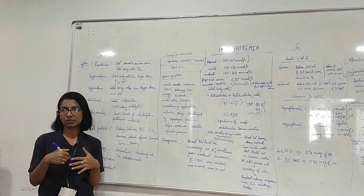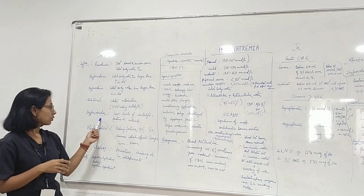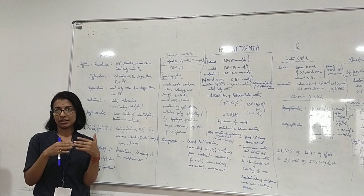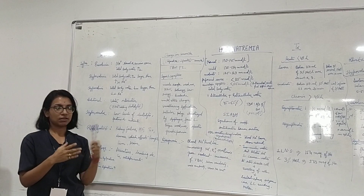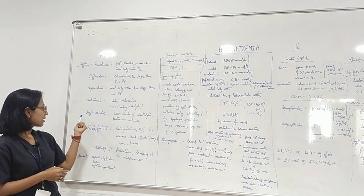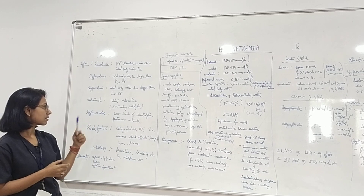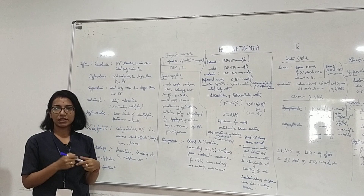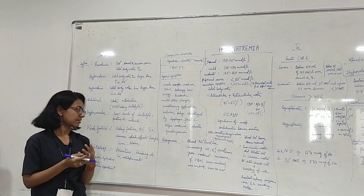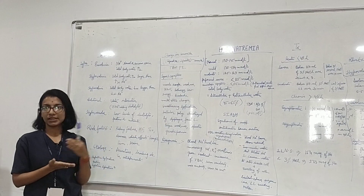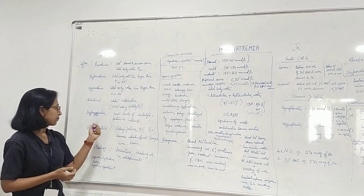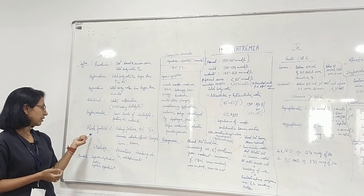Fourth is dilutional hyponatremia, caused by water intoxication when we drink too much water without adding electrolytes, diluting all electrolytes. Another type is hypo-osmolar hyponatremia, caused by low levels of all electrolytes — sodium, potassium, and others — along with nutrient deficiency and protein deficiency.